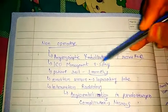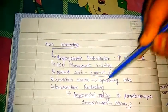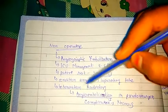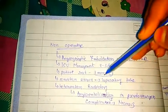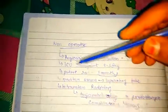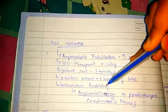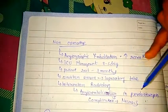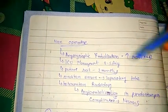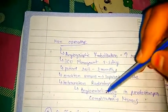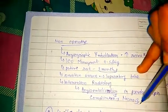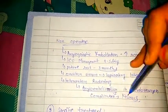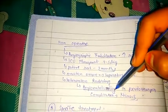Then ICU management for 2 to 5 days, and patient rest for 3 months. If the condition worsens, we proceed to laparotomy. As an interventional radiology measure, angioembolization can be used for pseudoaneurysm, but its complication is necrosis, so care should be taken.